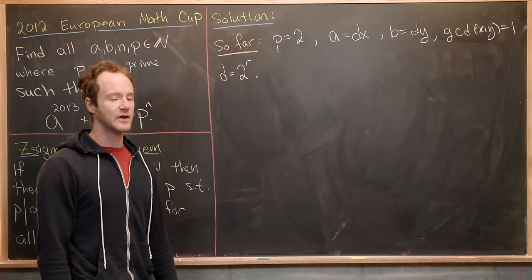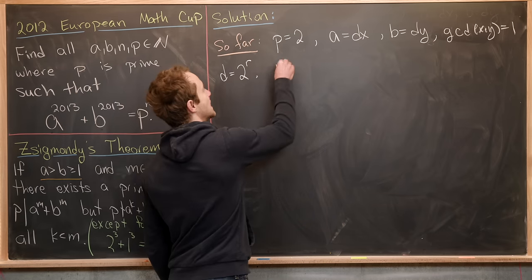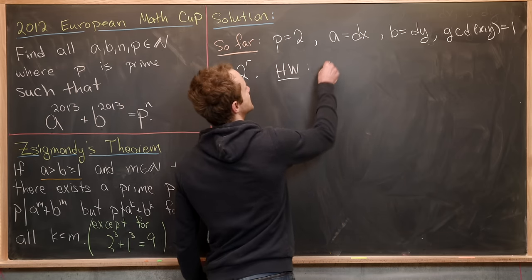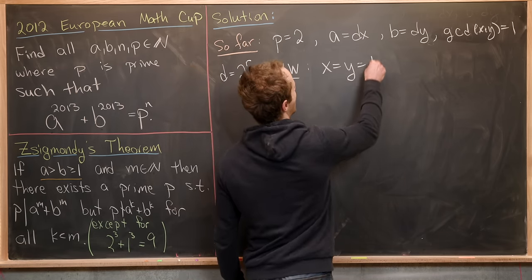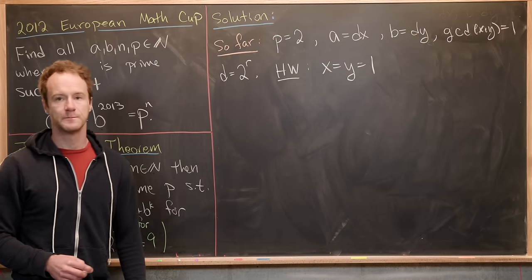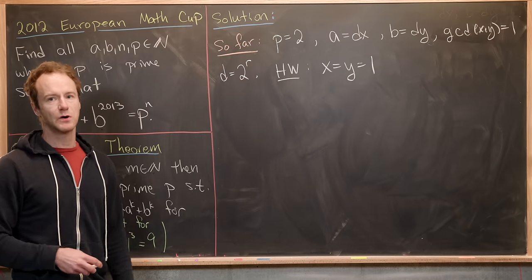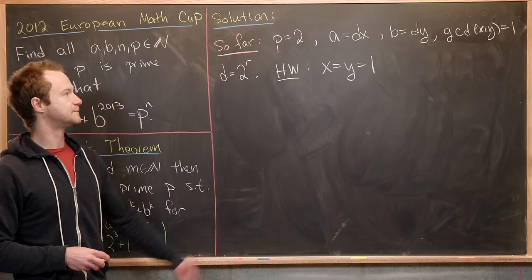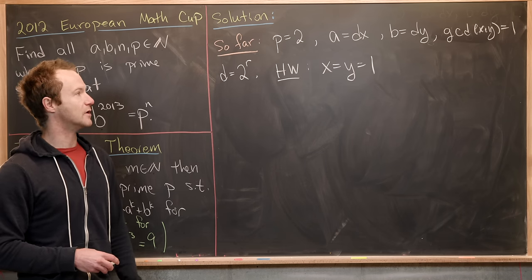Now I'm going to leave you guys a little bit of a homework problem. And you can post in the comments. And that is that x and y are both equal to one. So again, like I said, post your argument for that in the comments. So now that we have x and y both equal to one, we're ready to finish this off.